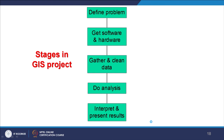If you go for a GIS project, there are different stages. First, define the problem — for what purpose and what is our aim to use GIS. Then you need GIS software and hardware and you acquire the data, aiming to get as organized and clean data as possible — clean meaning without errors. Then analysis is performed on the GIS platform. Finally, results are created through interpretation and analysis. This brings us to the end of our discussion about what GIS basically is.